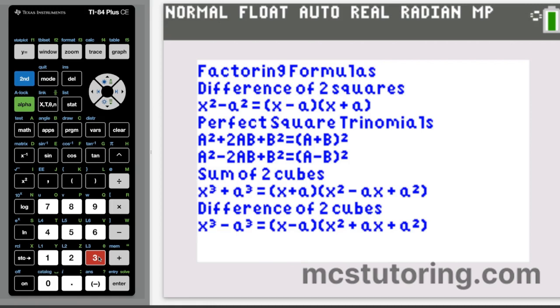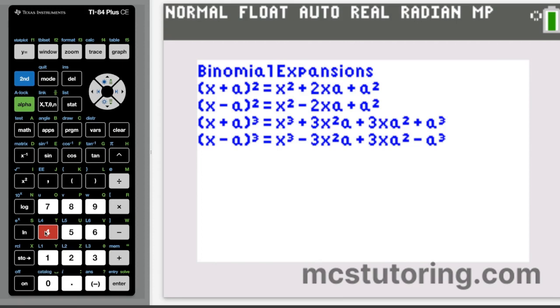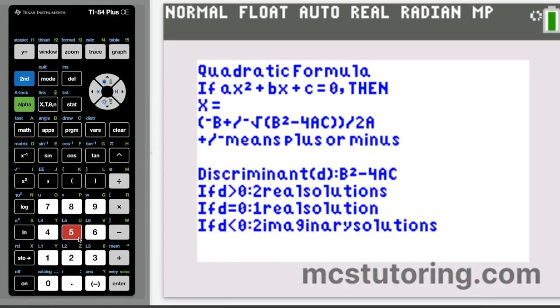So then we go on to the binomial expansions. Just a basic easy one. It was in that last menu, but I wanted to show it specifically. If we do the quantity x plus a squared or quantity x minus a squared, same thing for x plus a cubed or x minus a cubed. You can go to the left side or to the right side of those equations, whichever way you need to go for your specific application.